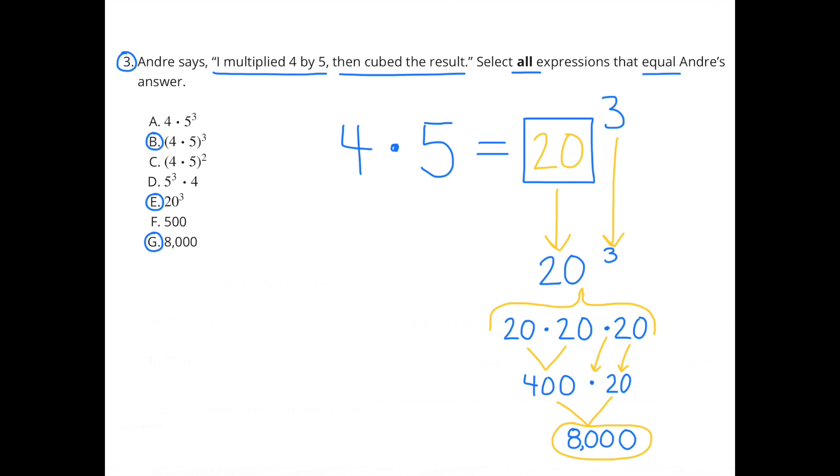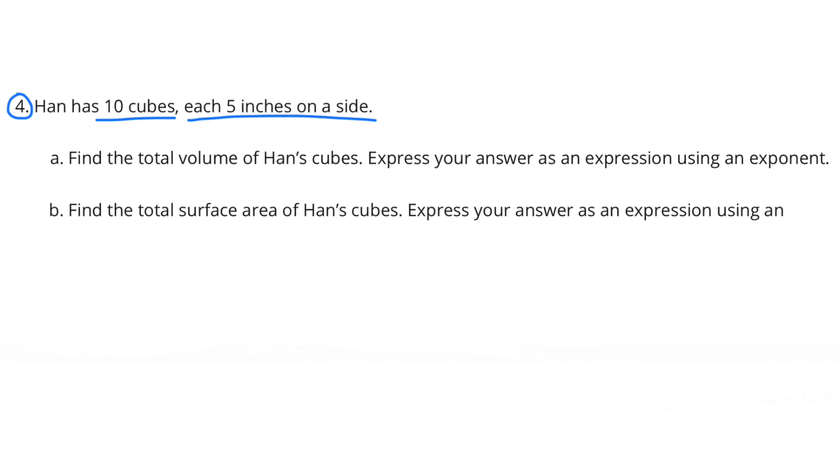I selected B, E, and G. Number 4. Han has 10 cubes, each 5 inches on a side.